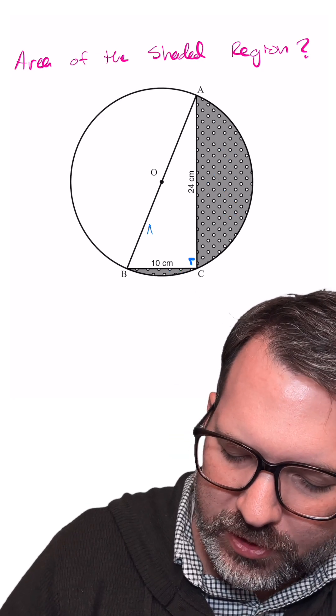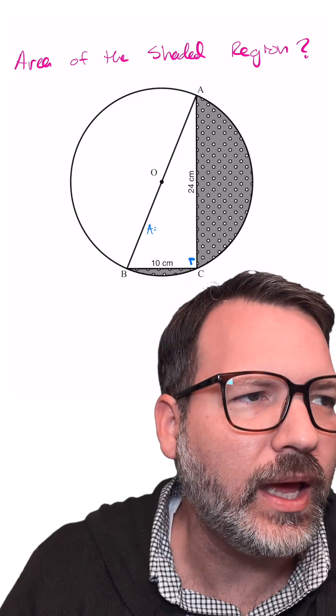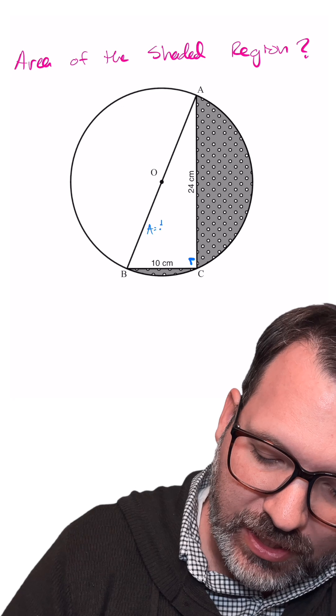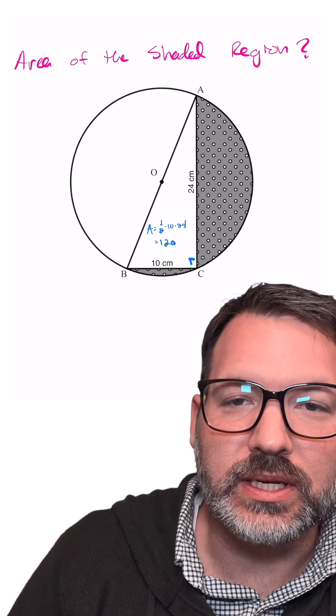Well, there are a couple of things we can do here. First of all, the area of the right triangle is relatively easy to come up with. Like any triangle, its area is given to us by one half of the base times the height. So in this case, that's gonna be one half times 10 times 24, which is 120.